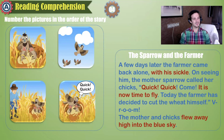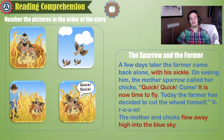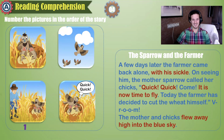Number the pictures in the order or sequence of the story. Picture one: the mother talking with her two chicks. Picture two: they are in the sky. Picture three: the farmer is coming with his sickle. Picture four: she's saying quick, quick. This is the order.